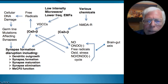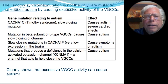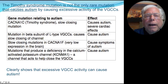There is clear genetic evidence that excessive VGCC activity can cause autism. There is a mutation in one of these VGCCs that causes what's called Timothy syndrome, where the channels when they open are very slow to close, so you get much higher increases in intracellular calcium as a consequence.